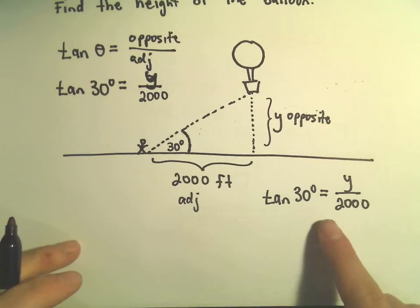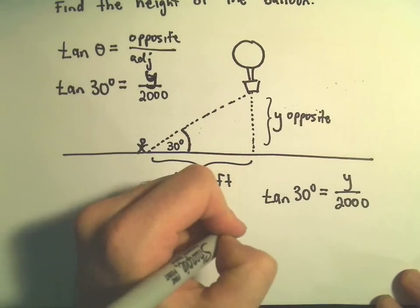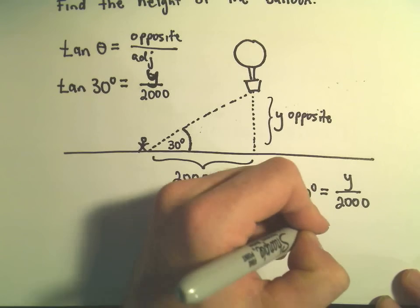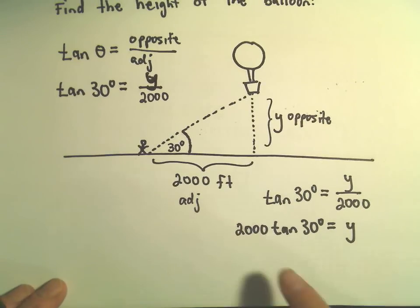To get Y by itself, we can just multiply both sides by 2,000. So if we multiply both sides by 2,000,